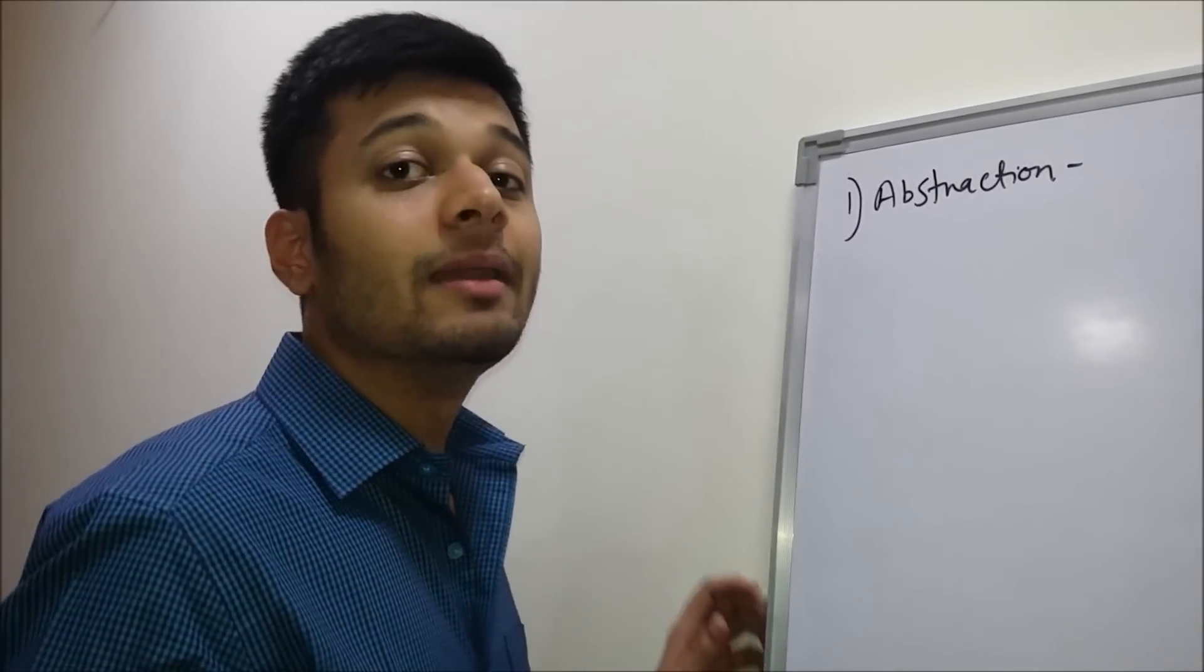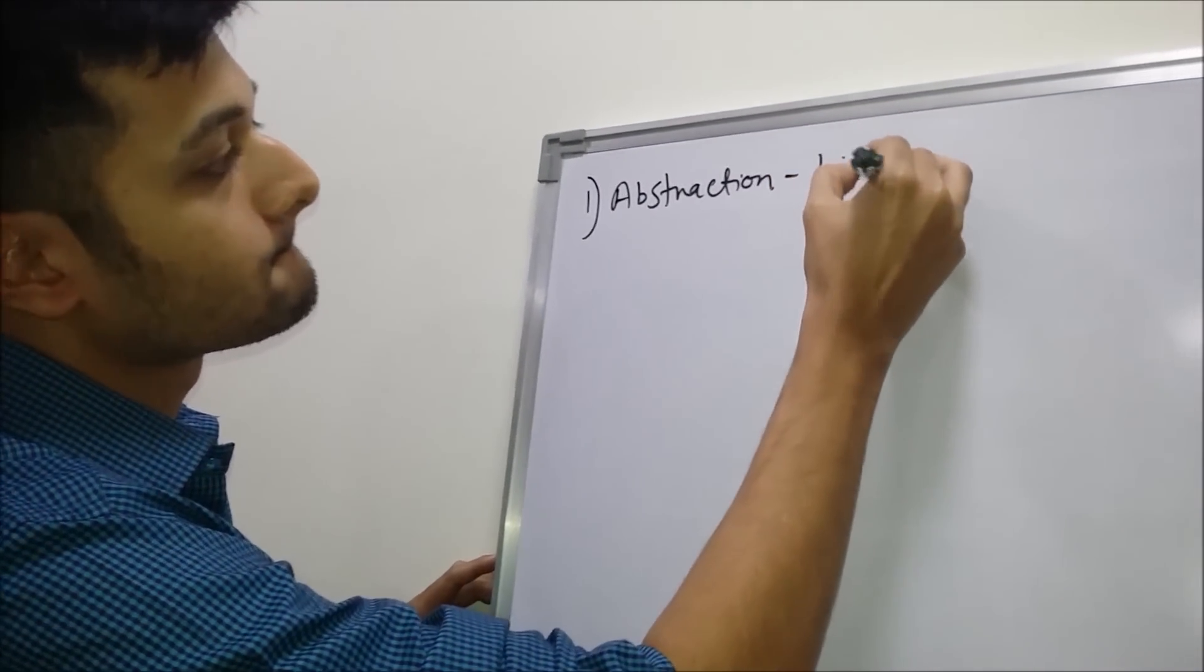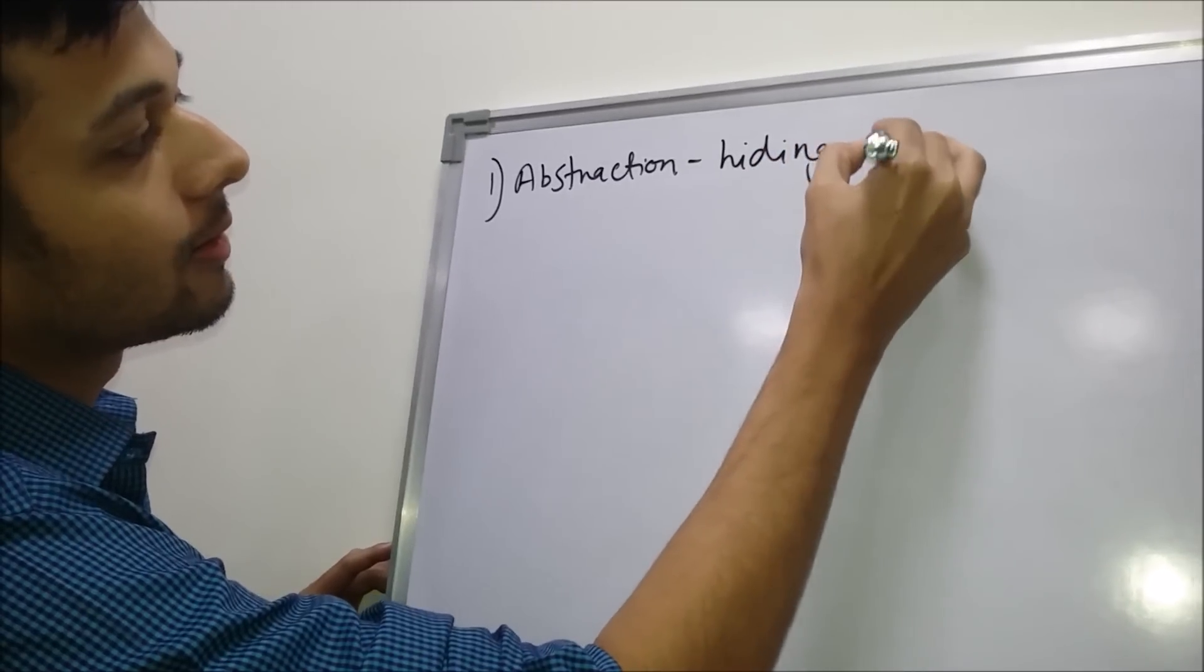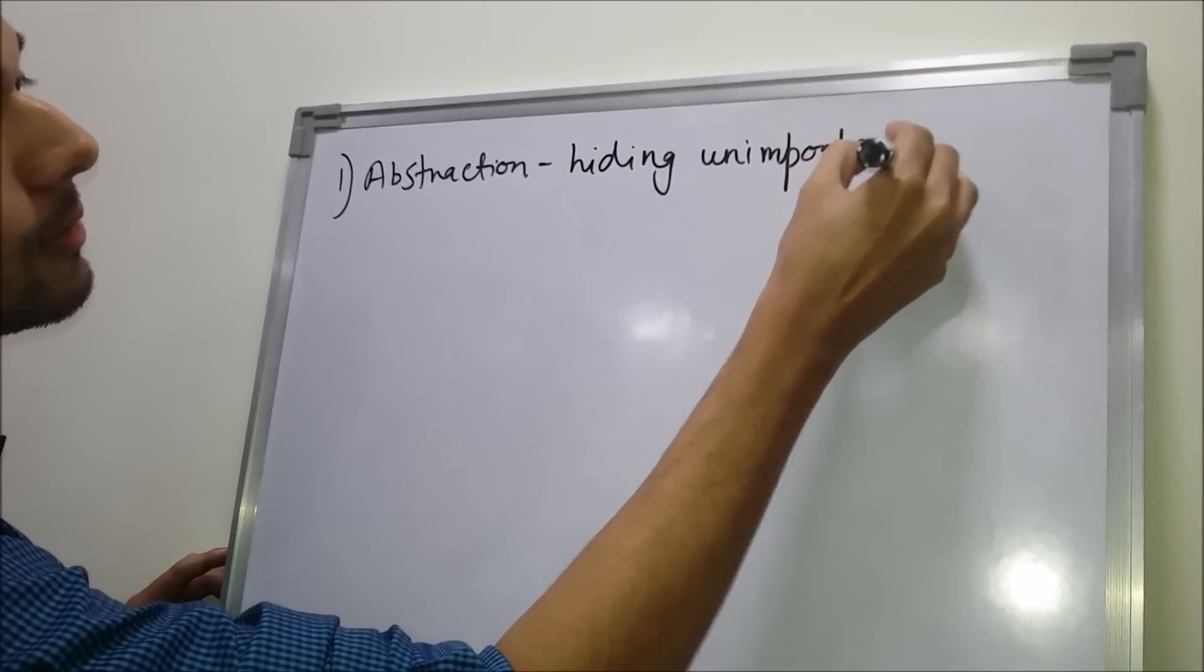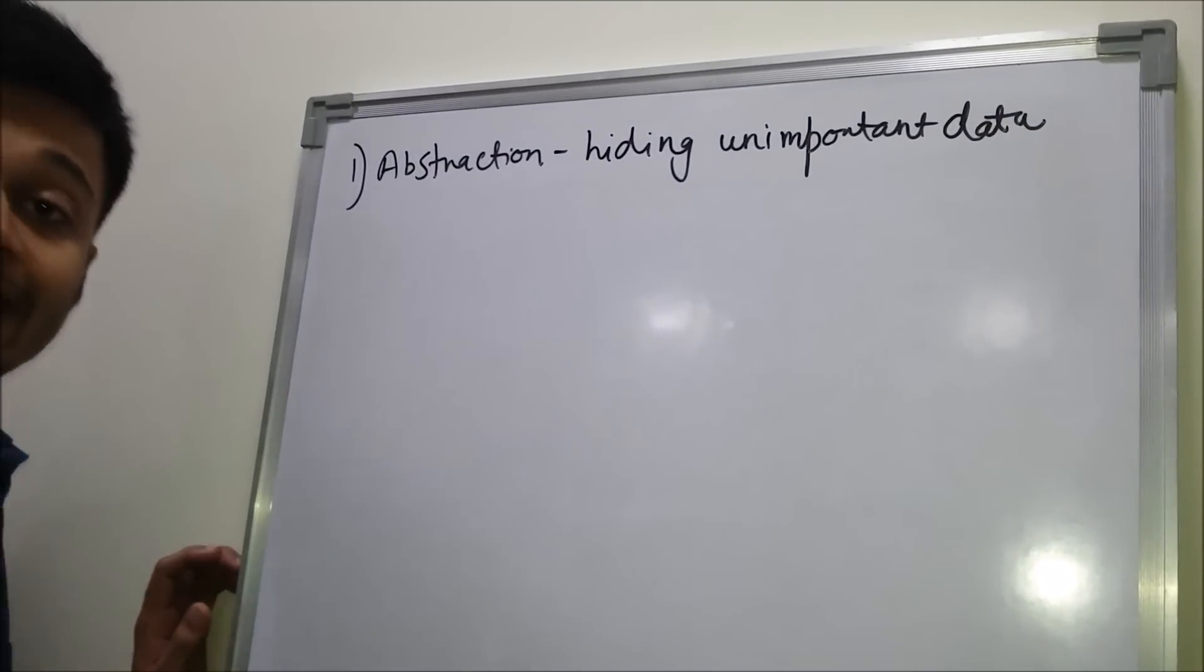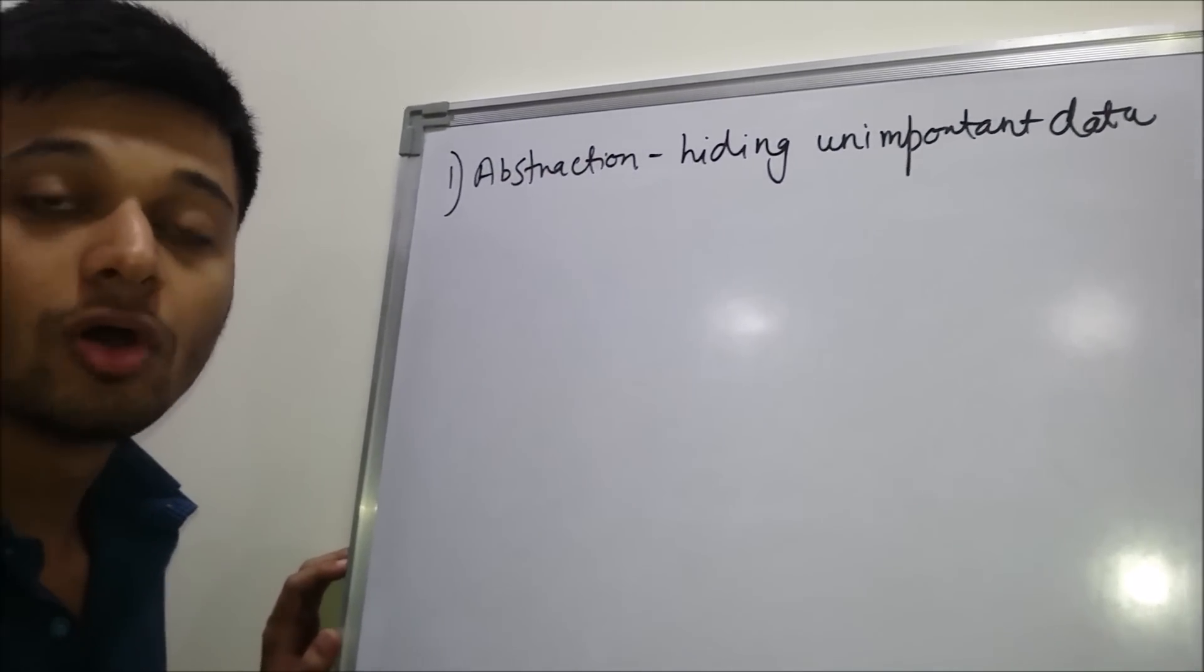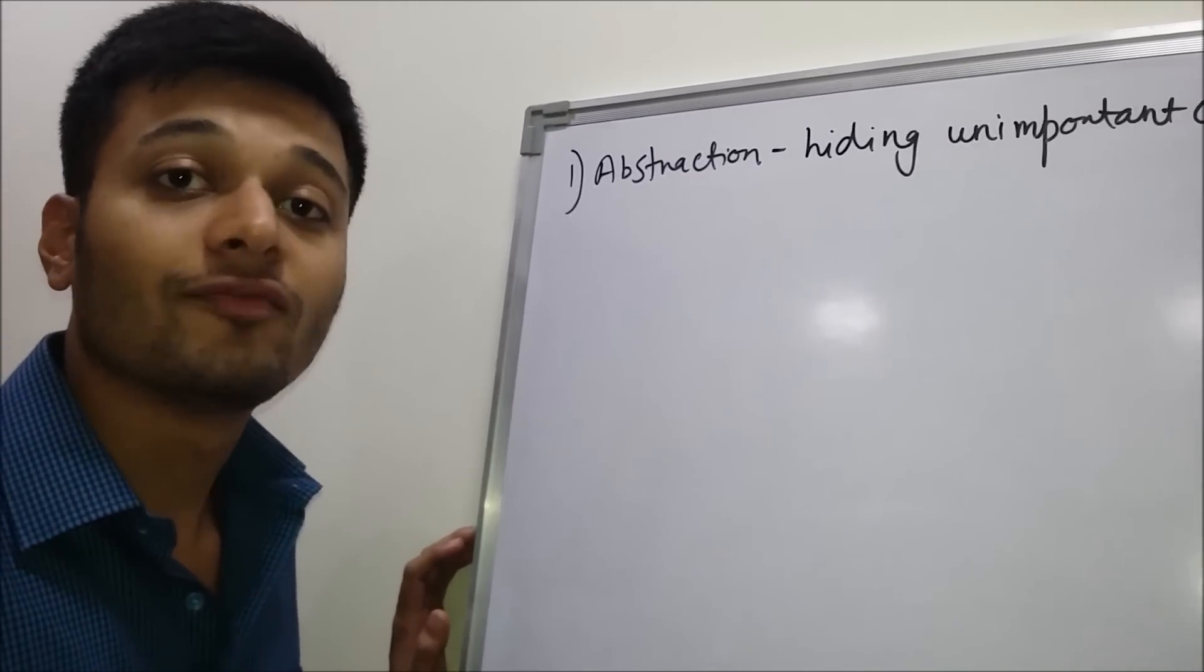Abstraction means hiding the unimportant data and revealing only the important ones, or you can say revealing only the essential characteristics of a thing. This is abstraction.